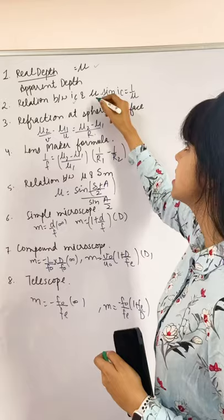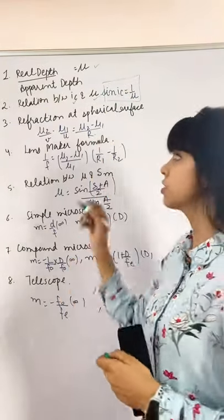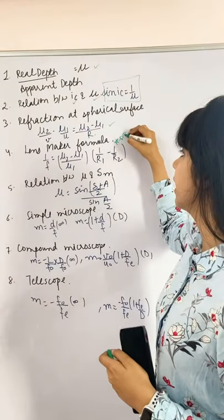Next, refraction at spherical surface and lens maker formula. This is the most important derivation for five marks.